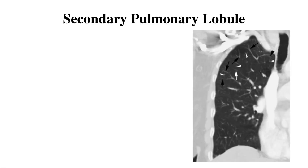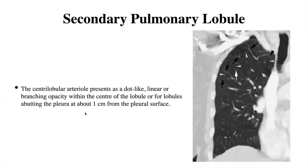Coming to the secondary pulmonary lobule as seen on CT: the centrilobular arteriole presents as a dot-like structure, visible as a dot with linear or branching opacity within the center of lobules, or for lobules abutting the pleura, about 1 cm from the pleural surface. You can see these dot spots surrounded by the interlobular septa.